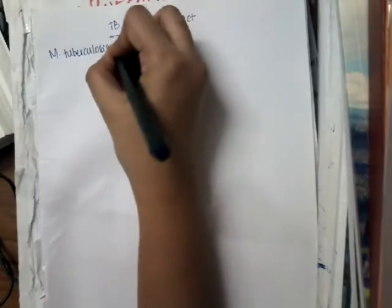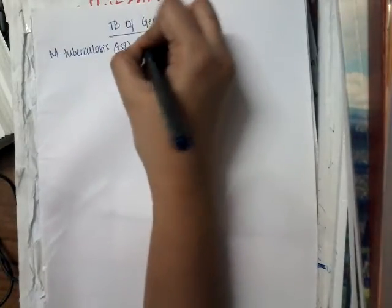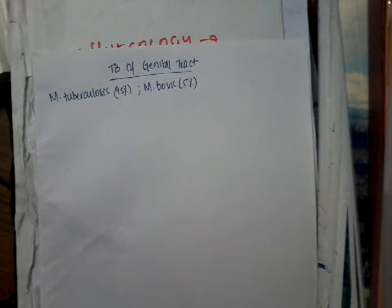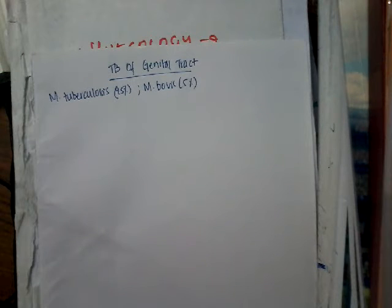Welcome to a new lecture on tuberculosis of the genital tract. Tuberculosis of the genital tract, like tuberculosis anywhere, is mainly caused by Mycobacterium tuberculosis — responsible for 95% of cases — while Mycobacterium bovis accounts for only 5%. Mycobacterium tuberculosis is stained by Ziehl-Neelsen stain, also called acid-fast stain.